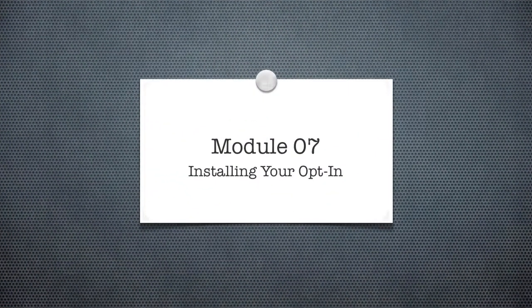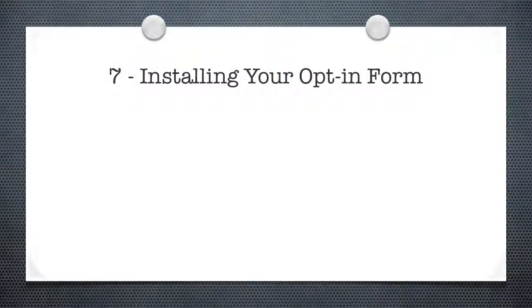Hey, it's Jason. Welcome back to WordPressFoundations.com. This is module 7: installing your opt-in form. An opt-in form is basically what happens whenever somebody comes to your site and opts in. When you joined WordPressFoundations.com, you opted in — you put in your name and email address into a little box and clicked a button. What that does is it allows me to say, 'Hey, I just created this brand new video, here's the link and here's what it's going to do for you.' That's very powerful — it allows me to communicate with you.